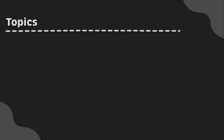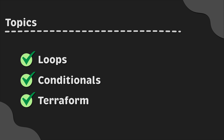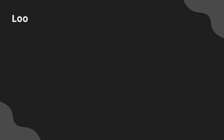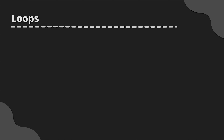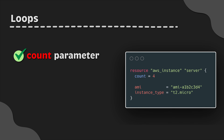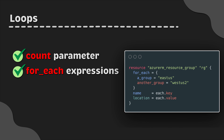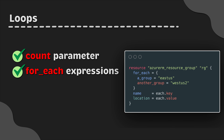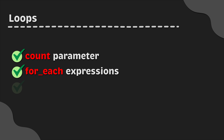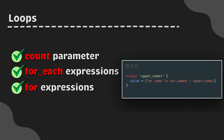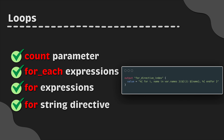Here are the topics we'll cover in this video: loops, conditionals, and Terraform pitfalls. Terraform provides a variety of looping structures, each designed for specific use cases and scenarios. The count parameter enables looping over resources and modules. For_each expressions are used to iterate over resources, inline blocks within a resource, and modules. For expressions loop over lists and maps. For string directives loop over lists and maps within a string. Let's explore each of these individually.